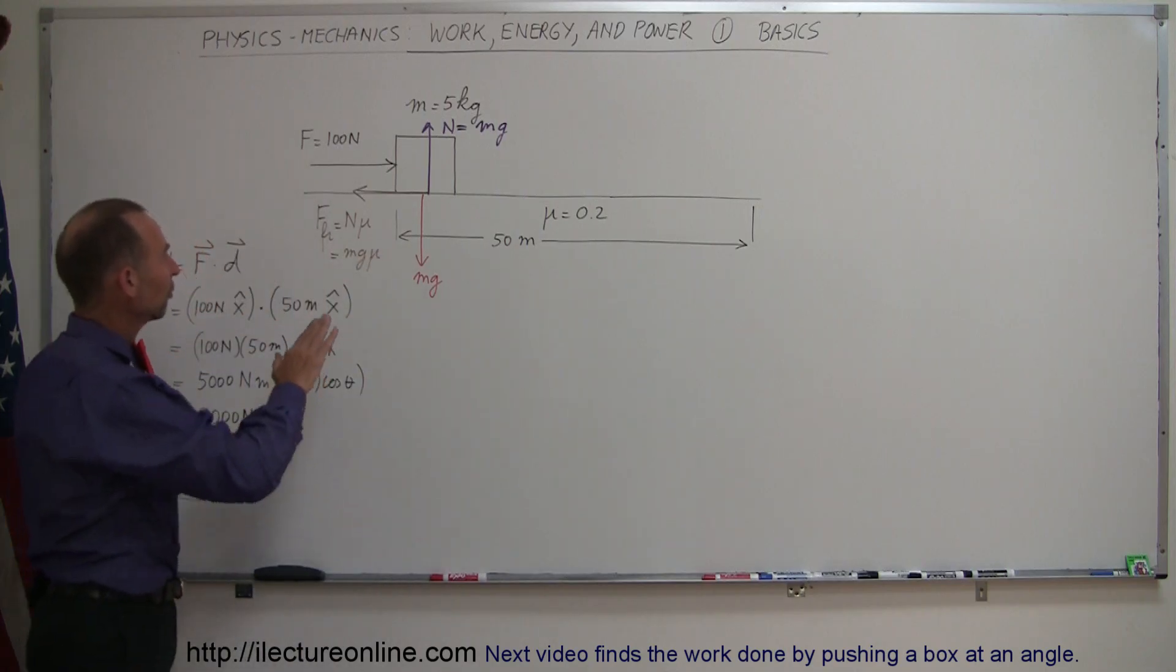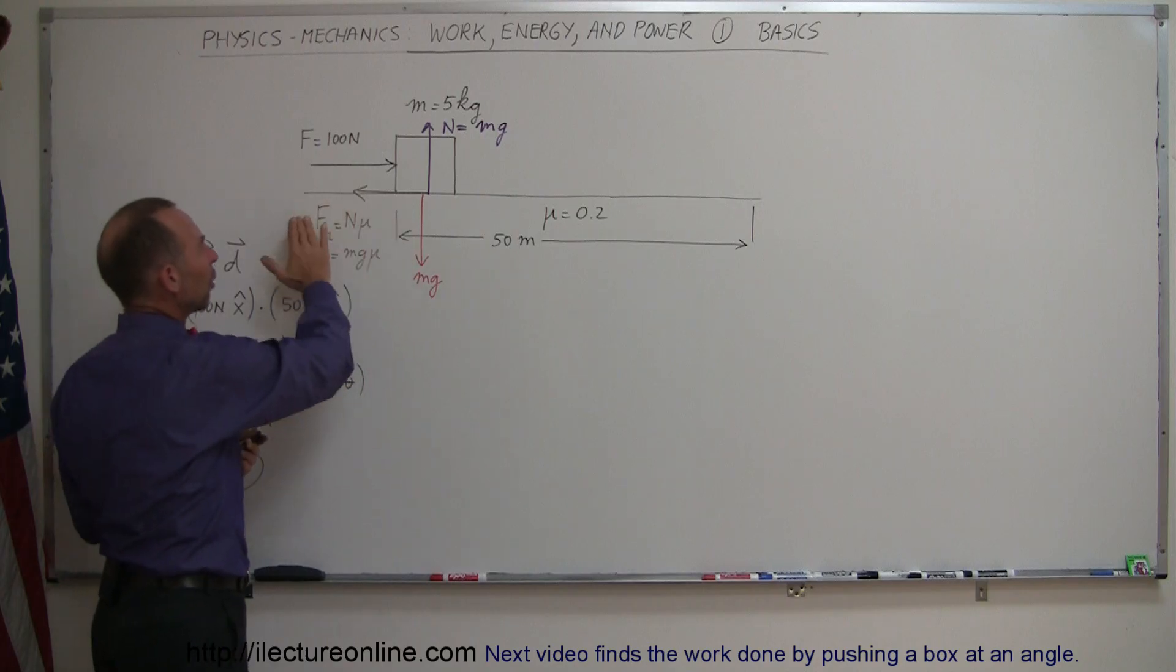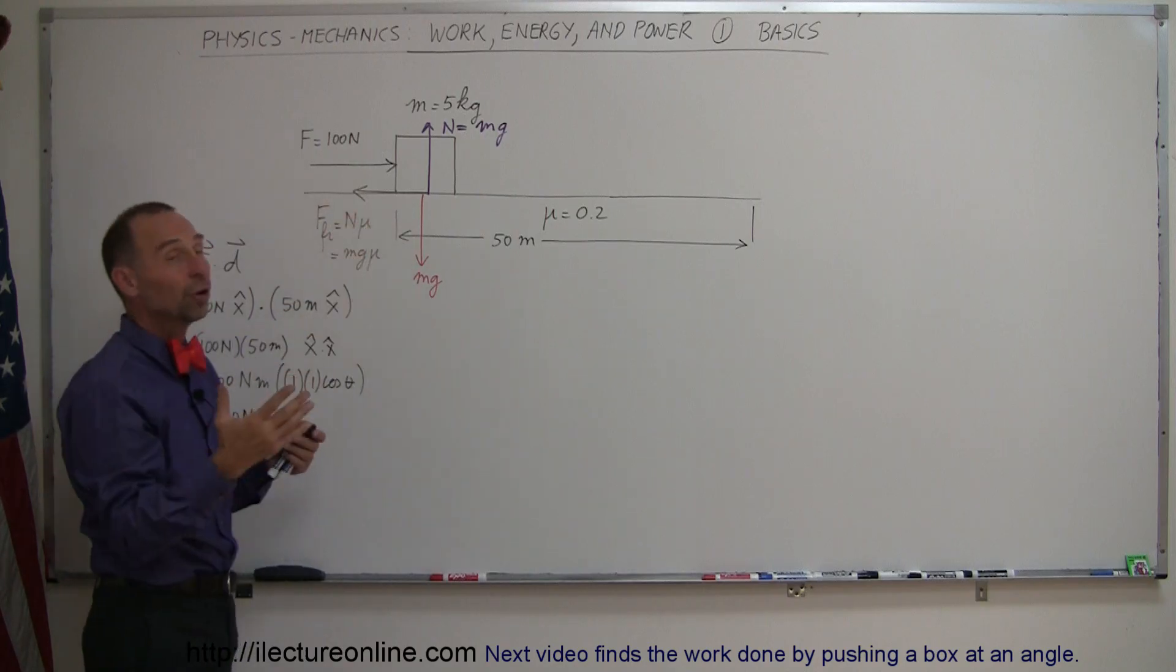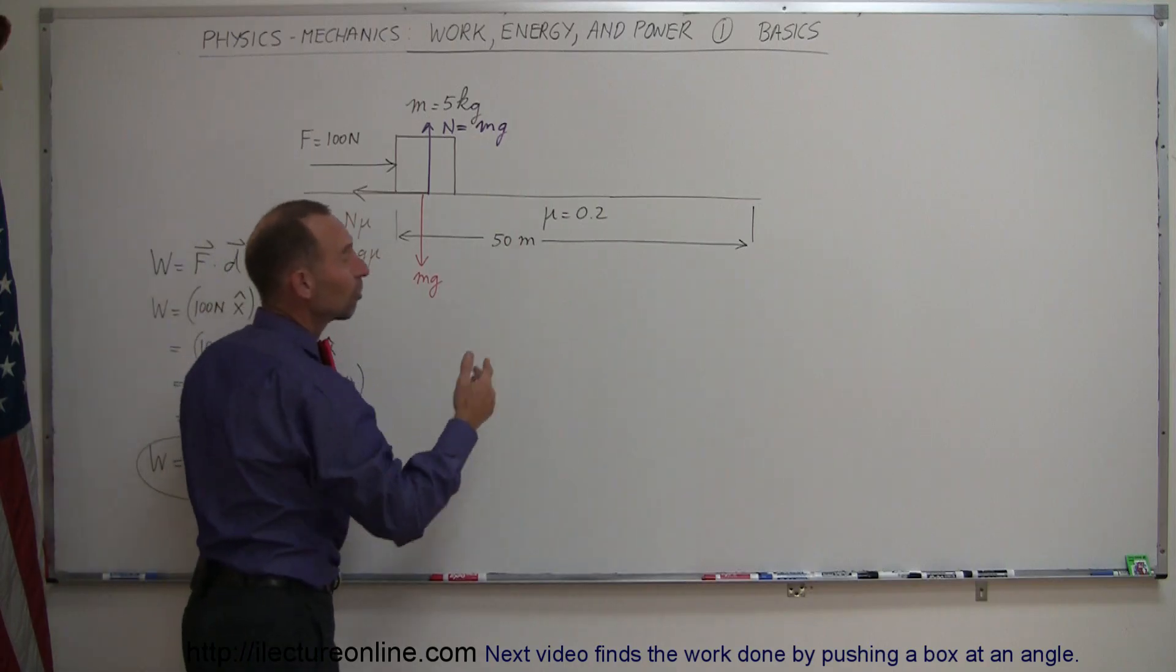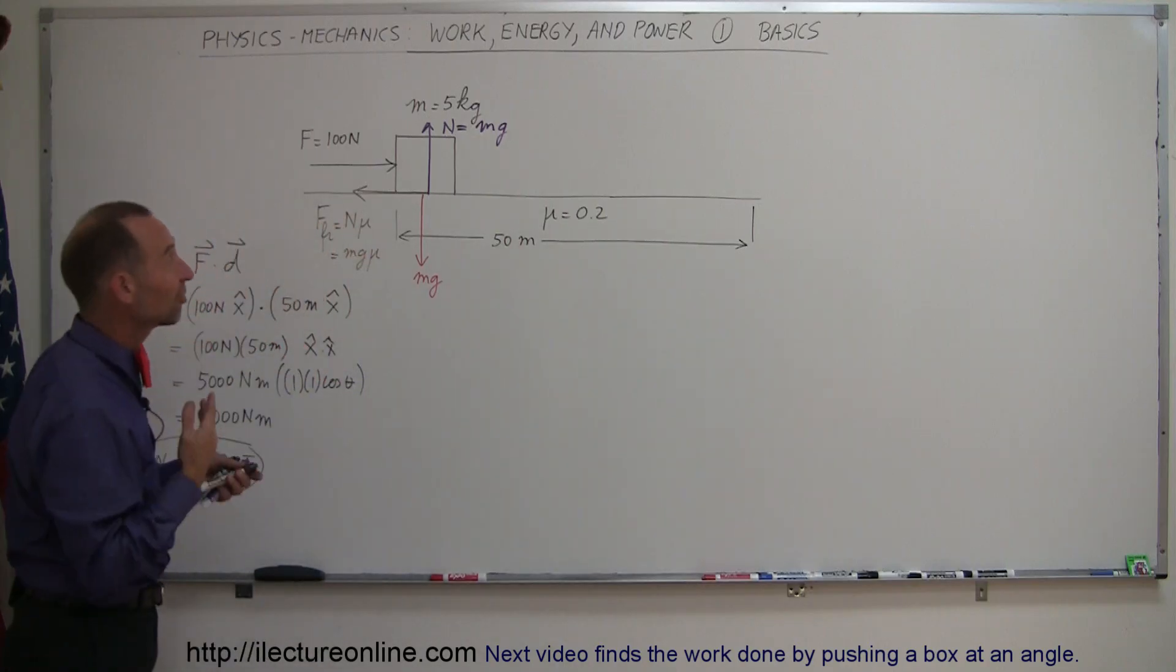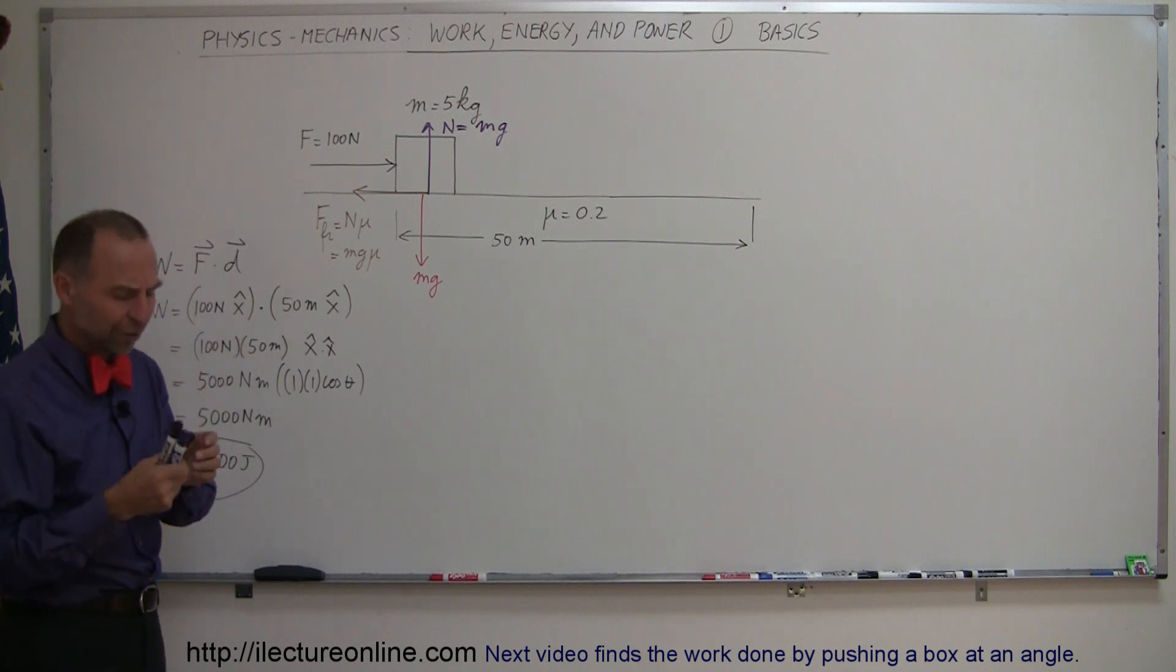So part of the force, part of the 100 newtons, is required to overcome the friction, and part of it, if there's any left over, will then be used to push the block. And of course, that block will then be accelerated because that will then be the net force. So let's find out how big the friction force is.